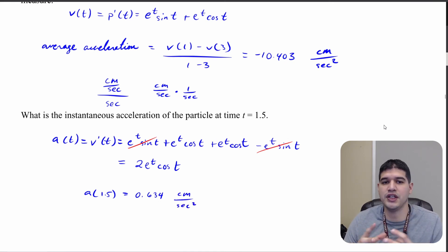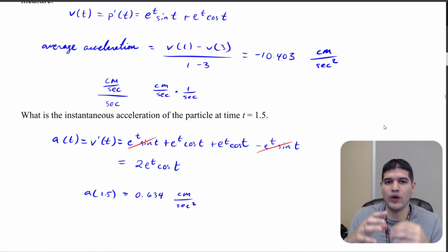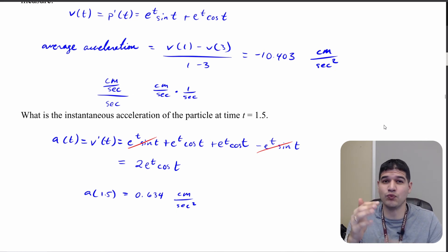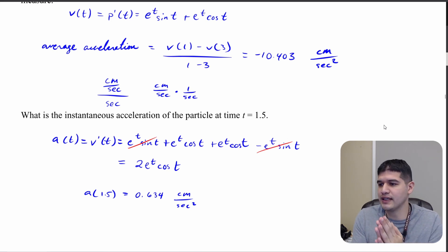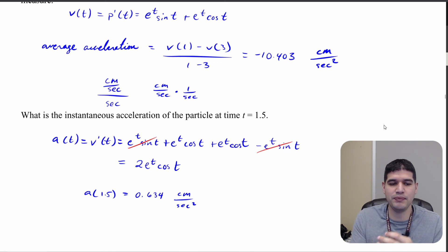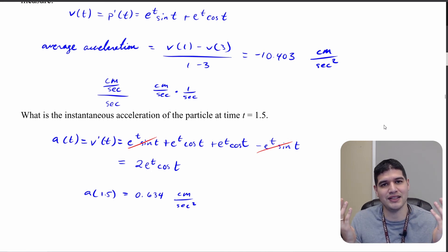That's your introduction to connecting position, velocity, and acceleration. In the next video we'll solidify what these mean, how they connect to f, f prime, and f double prime, and we'll start using them in graphical problems. If you're not getting the same values, please reach out — you may not be in radian mode. I'm Mr. Hernandez and this was Mr. Hernandez Teaches.